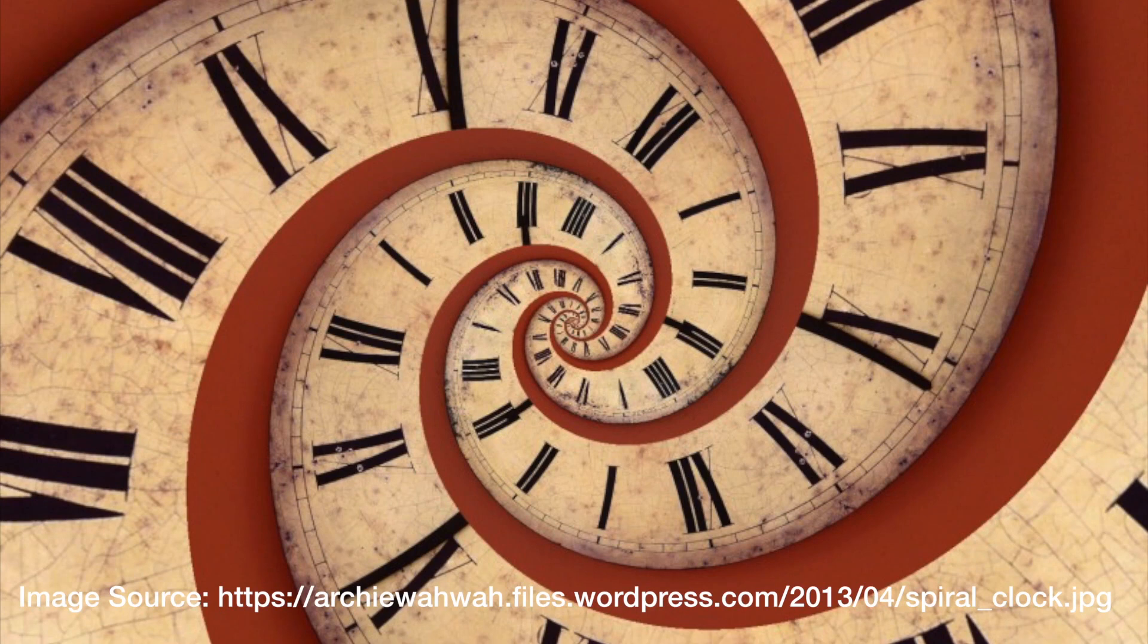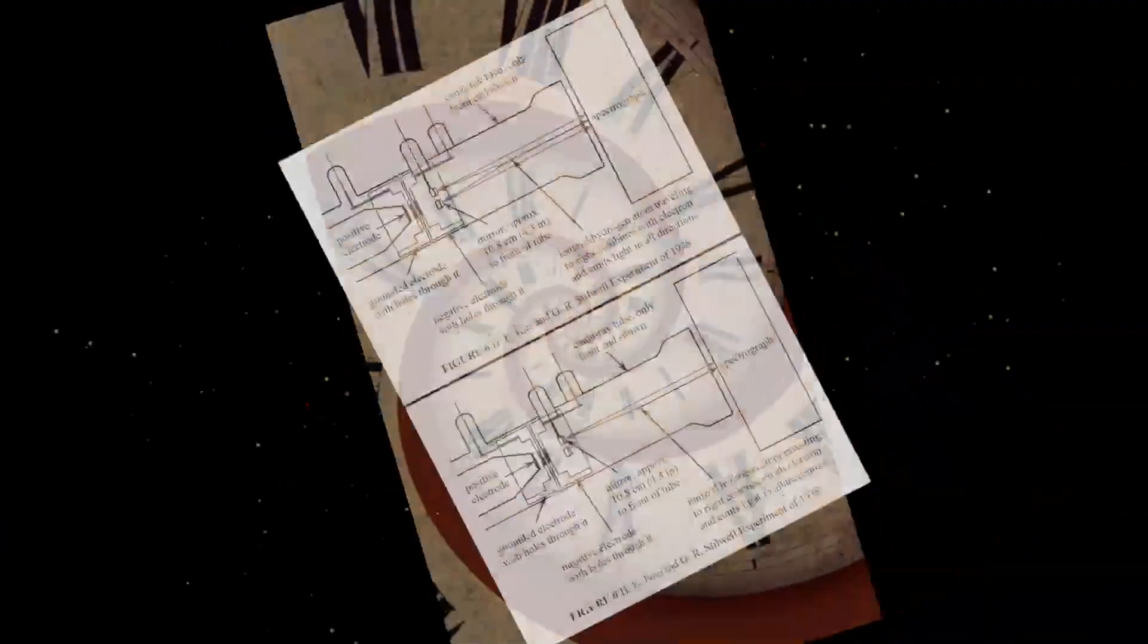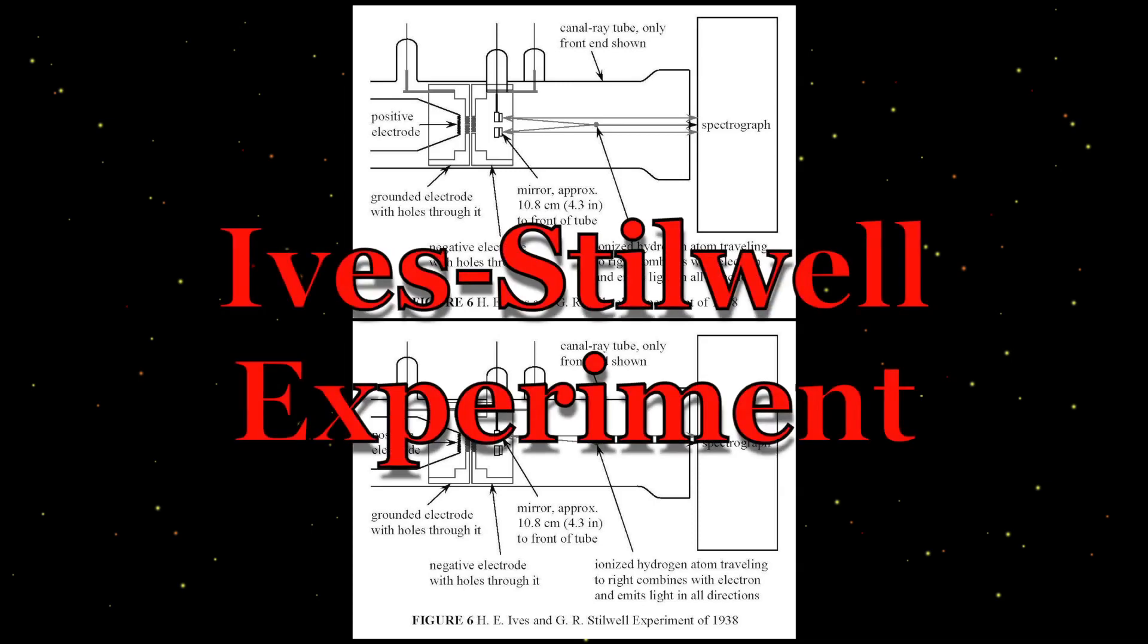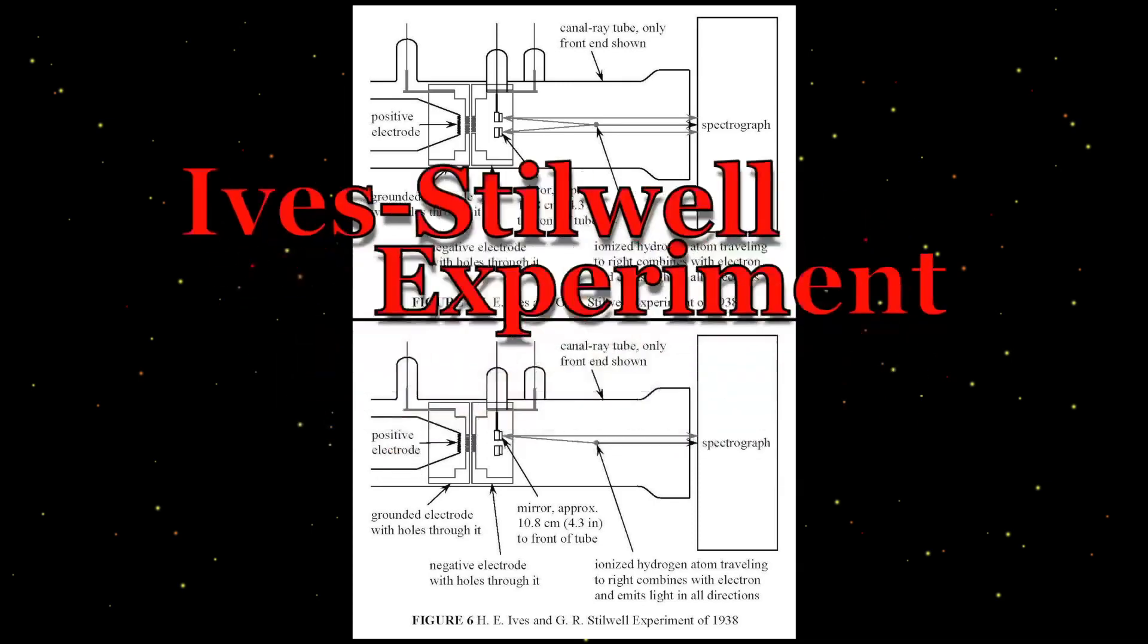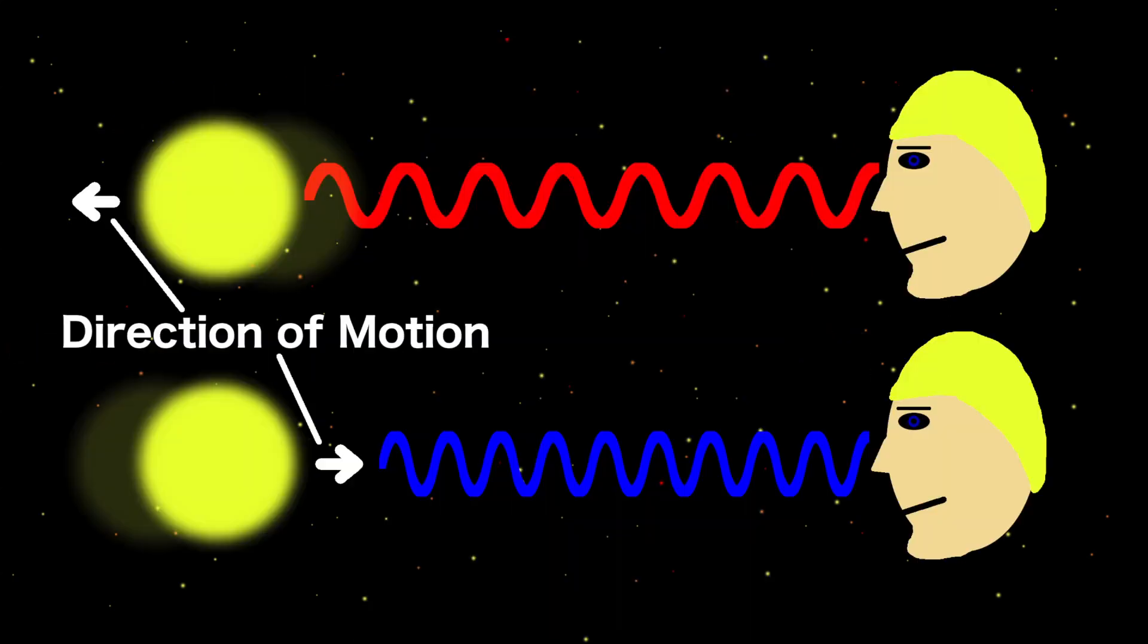Although it did not specifically prove time dilation, it was enough to show the world that his theory was on the right track. It was not until 1938 that the first test directly confirming time dilation was performed. This was called the Ibis-Stillwell experiment. It took advantage of the fact that light changes frequency with motion. Just like sound changes frequency when its source is moving, like the sound of a siren when an ambulance drives by, light changes frequency as well. We perceive this as a change in color.